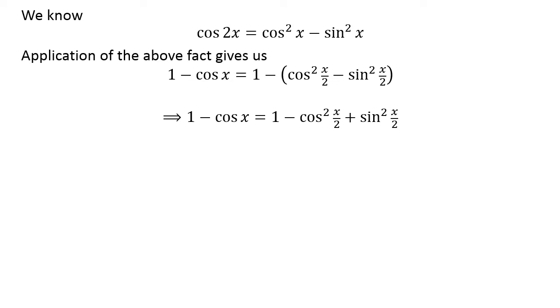Taking brackets off gives us 1 minus cosine of x is equal to 1 minus square of cosine of half of x plus square of sine of half of x.